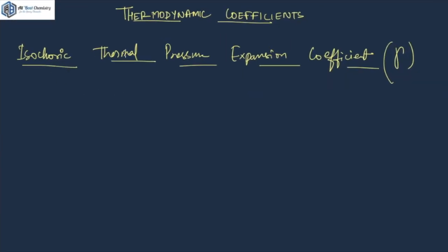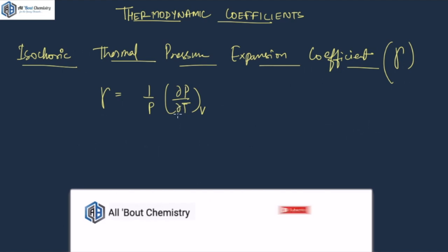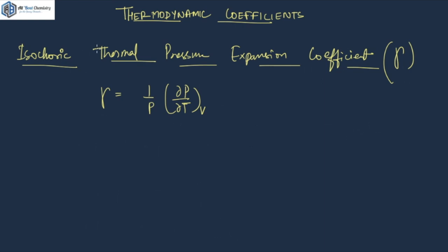Our next coefficient is the isochoric thermal pressure expansion coefficient, which is denoted by gamma. It has the formula: gamma equals 1 upon P, and del P by del T at constant V. This tells you about the relative change in pressure with respect to change in temperature at a constant volume. That's why it is an isochoric process — volume is constant — and since it depends upon temperature, it is the thermal pressure expansion coefficient. Here we are looking at the change in pressure, whereas in the previous two coefficients we were looking at the change in volume.